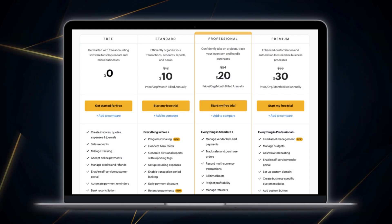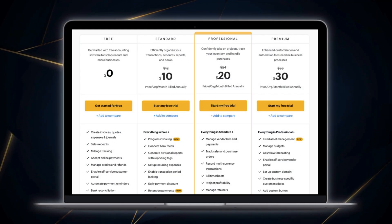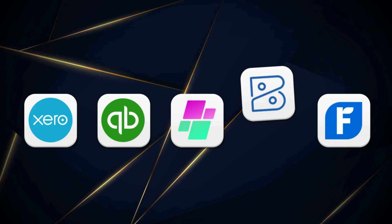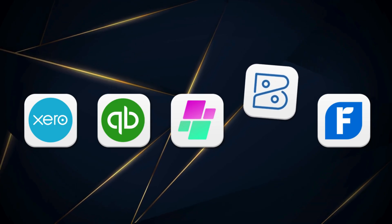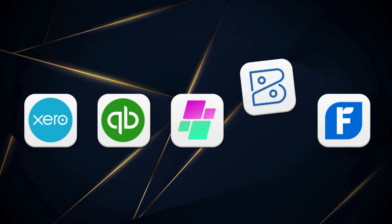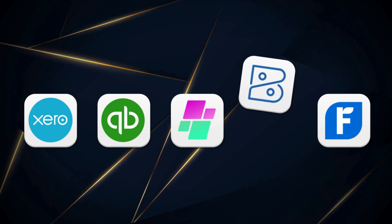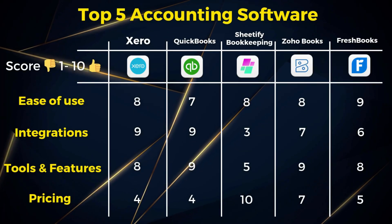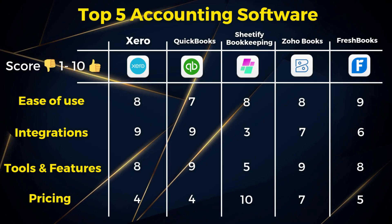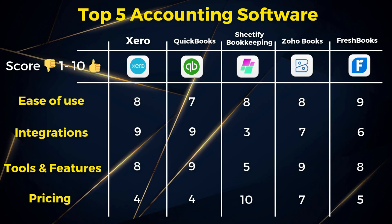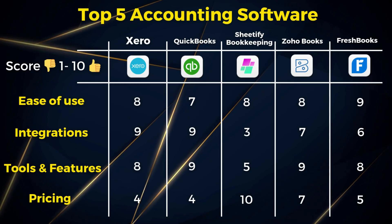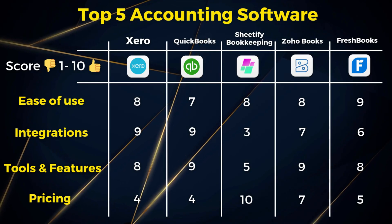You'll also get access to a 14-day free trial of their premium plan, and you can downgrade to the free plan at any time. One of the key differences between Zoho Books and other accounting tools is the completely free plan for micro businesses. Zoho Books offers everything small business owners need — it's also easy to use and they offer a completely free plan.